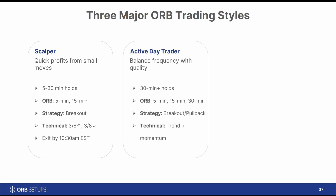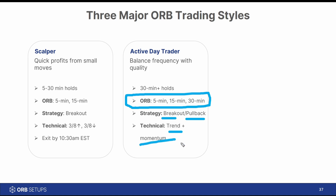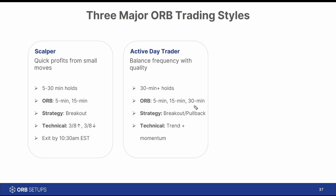The next trading style is that of an active day trader. This is where you're balancing both the frequency with the quality of the signals — all three opening ranges are available. This is the bracket I would consider myself in. I look at both strategies, but my primary technical filters are around trend and then layering on momentum on top of that. Most of the trades that I have are more than 30-minute holds, and I like to focus more on the 15-minute and the 30-minute ranges. I just use the 'all' setting to not exclude the five-minute purposefully.